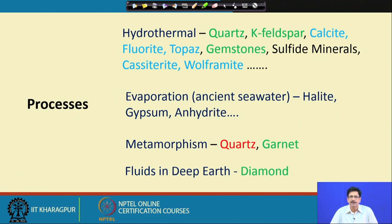Such paleo fluids are preserved in minerals like quartz, potassium feldspar, calcite, fluorite, topaz, gemstones, cassiterite, wolframite, and ore minerals like sphalerite. Using specialized microscopic techniques like the infrared microscope, we can also study fluid inclusions in minerals that are opaque to ordinary light — studying inclusions in sulfide minerals like pyrite, molybdenite, and stibnite. In fact, any of the sulfides should be suitable for study of fluid inclusions.